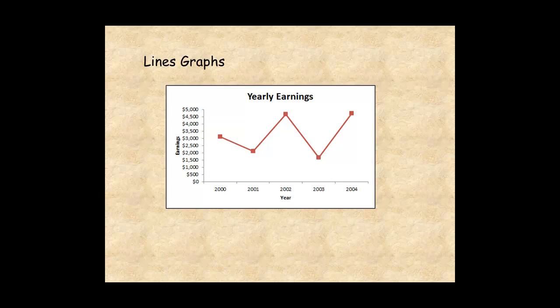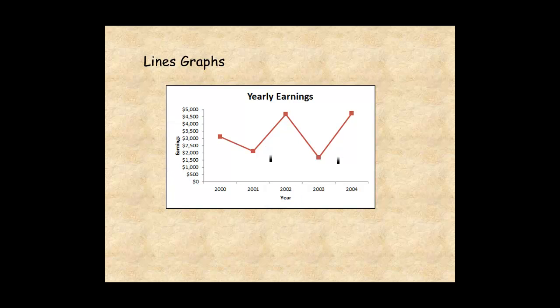A simple line graph is a kind of graph that is plotted with only a single line. It shows the relationship between two variables. For example, this graph shows the relationship between time in years and earnings in hundreds of dollars. You can see that earnings have had ups and downs, but are up over five years.